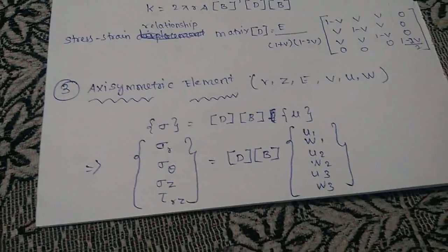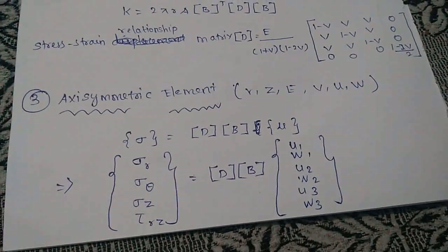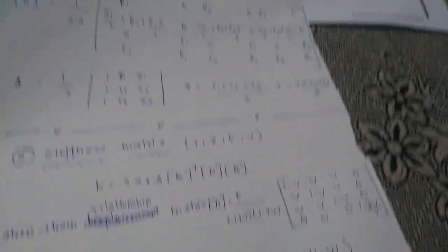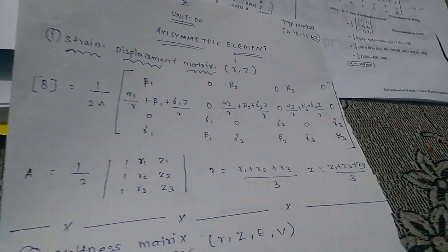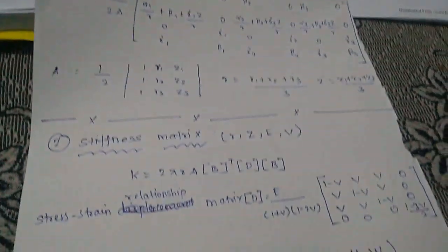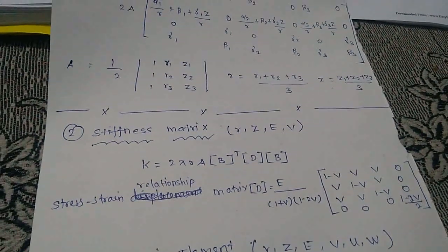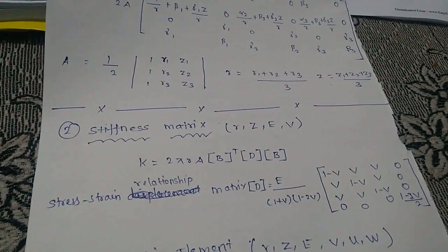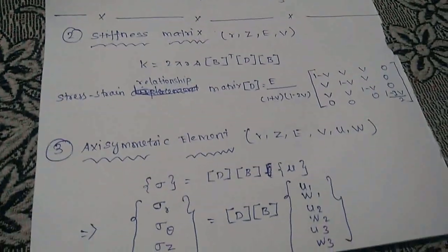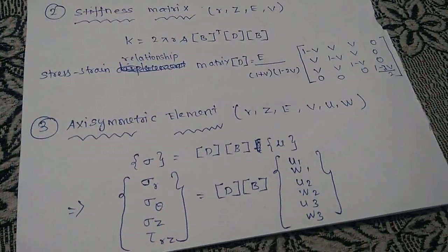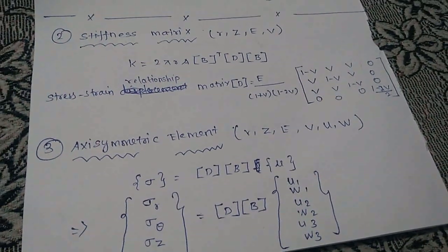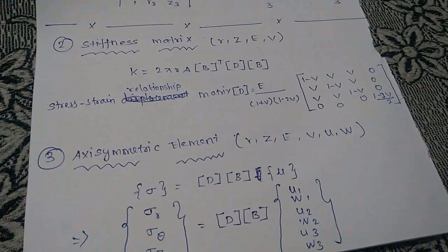That is the D-matrix formula. For the axisymmetric law, the first case uses R, Z, E, V as the given data. The formula for case 2 and case 3 also uses R, Z, E, V as given data.